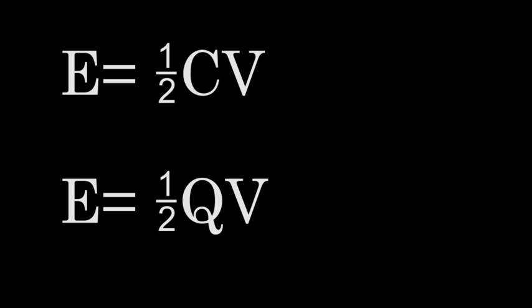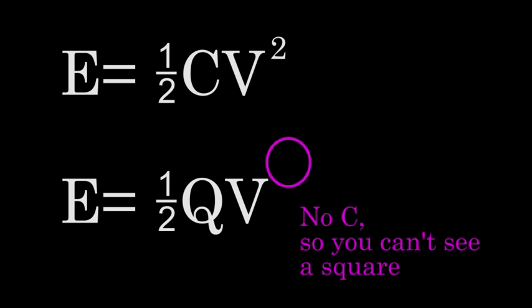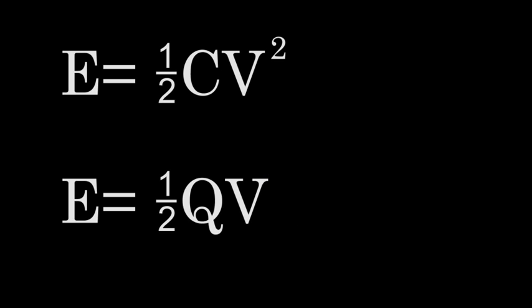But now we have a problem. In one of these formulas, the V is squared, and in one of these formulas, the V is not squared. I used to have trouble remembering which is which, but here's how I remember now. If you use the formula with the C in it, then you can see the V squared. And if you use the formula that doesn't have the C in it, then you can't see the V squared. So these are the two formulas for the energy stored in a capacitor.